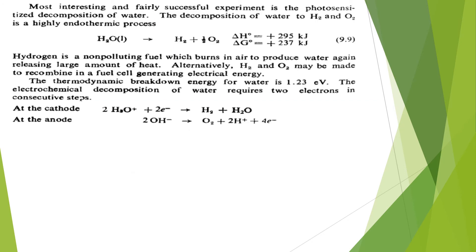Another is photolysis of water. The decomposition of water to H2 and O2 is a highly endothermic process. Water is dissociated into H2 and O2, where the ΔG change is plus 237 kilojoules, while the enthalpy change is about 295 kilojoules. Hydrogen is a non-polluting fuel. It burns in air and produces water again, releasing large amount of heat.